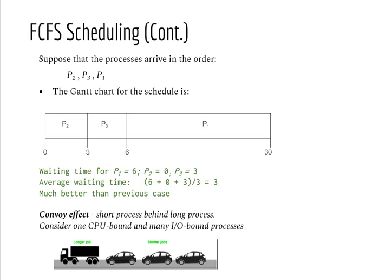Now if you see another view with P2, P3, and then P1, you can see the waiting time in that case is 3. But in the previous case where we had P1, then P2, then P3, the waiting time was 17.